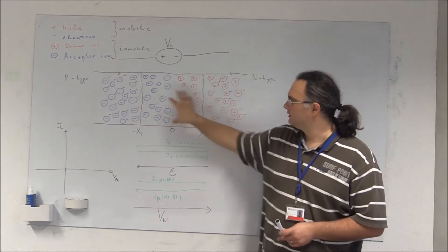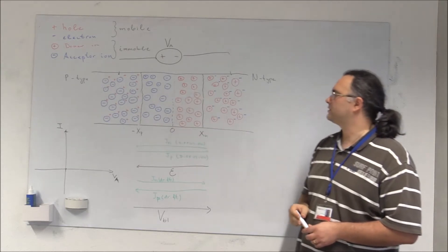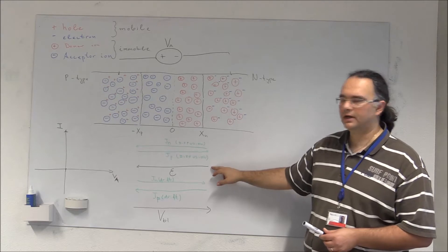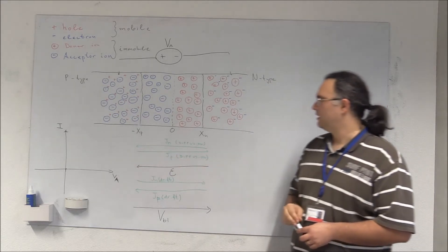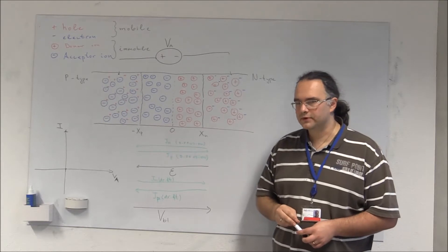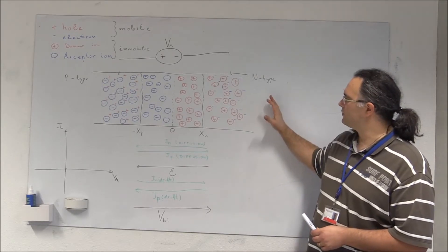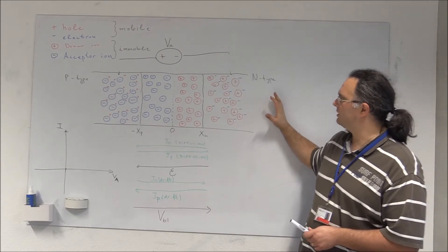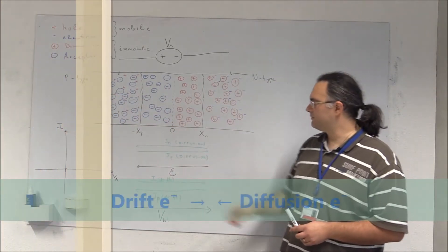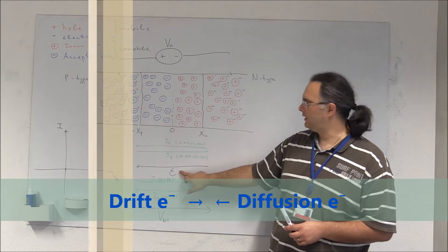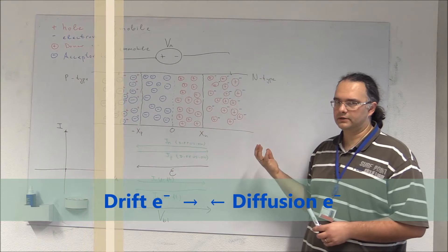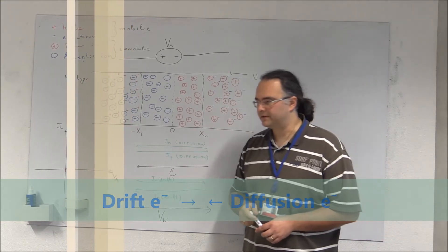These positive and negative charged ions create a built-in electric field. This built-in electric field balances two forces: the diffusion force for electrons from the N-type to the P-type material, and the electrical drift force due to the built-in electric field in the opposite direction.